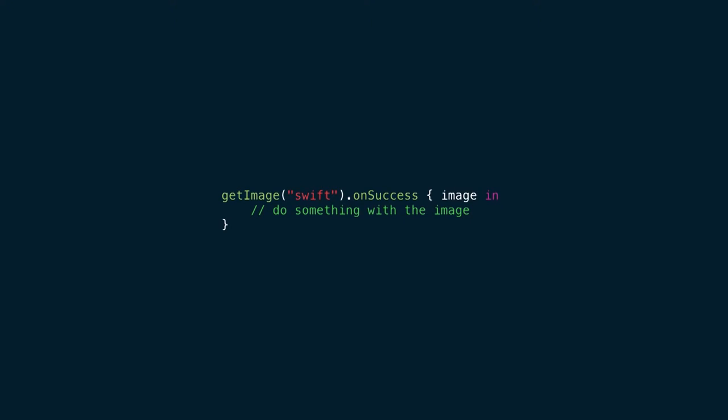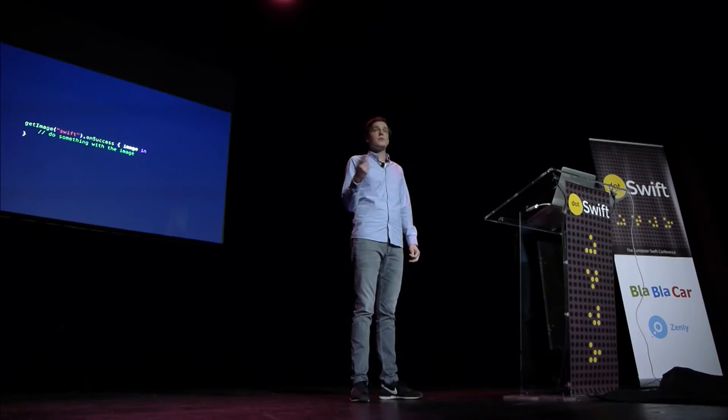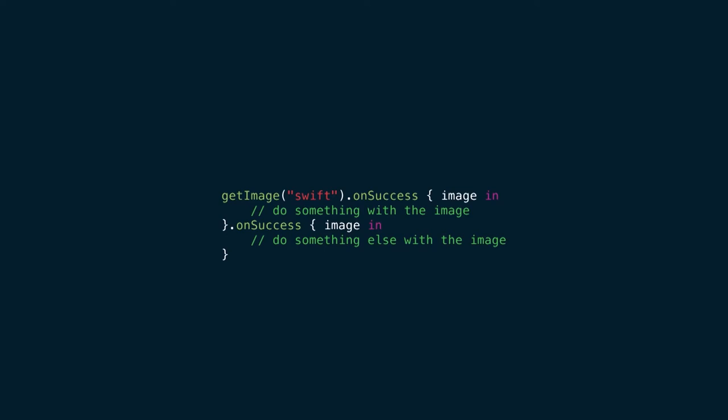With this placeholder, you can do a lot of things that you can do with the image itself. For example, we call getImage to get an image of Swift. Like completion handlers, what we could do is call onSuccess on the future and give it a block that will get called as soon as the operation succeeds. But with futures you can add a second completion handler, or add a third one that will only get called when the operation fails — so you separate the success case from the failure case.